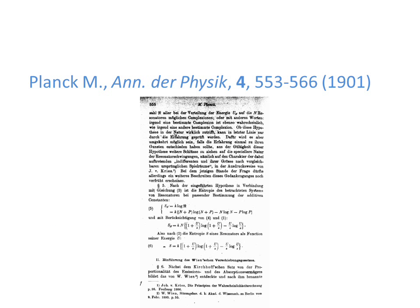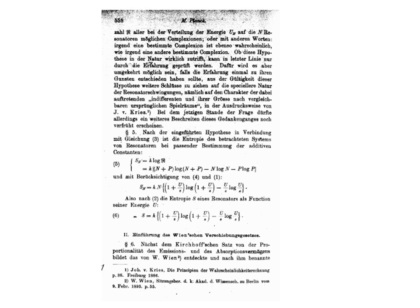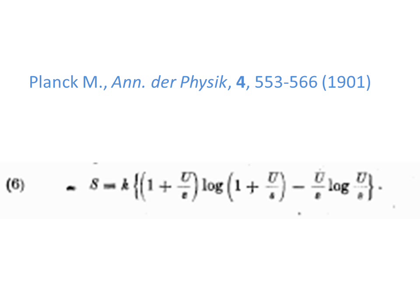In the discussed founding paper, Planck derives the following relation between entropy S and the quantity denoted by U, where epsilon is an energy element, elementary quantum of energy, and K is the Boltzmann constant.